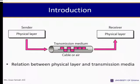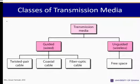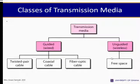When a sender sends a message to a receiver, there is a physical layer and a transmission medium — cable or air — through which the reception takes place. The classes of transmission media are guided, which is wired, and unguided, which is wireless. Under guided media we have twisted pair cable, coaxial cable, and fiber optic cable. Under unguided wireless, we have free space.